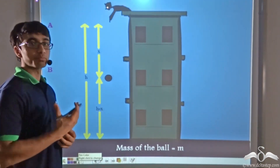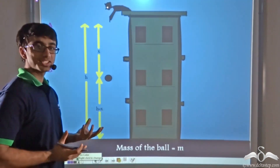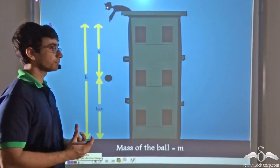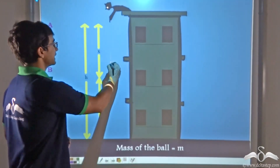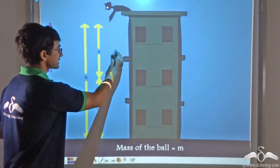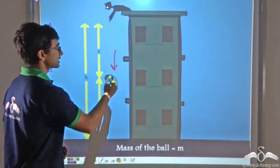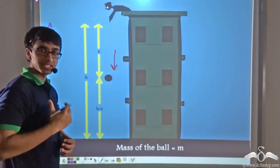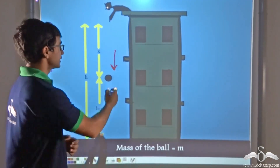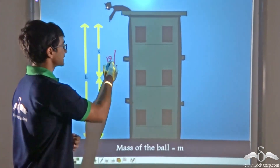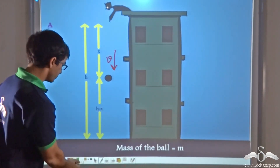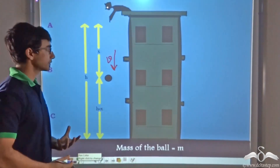Now when the ball is falling from the top of the building to the bottom, it possesses both kinetic energy as well as potential energy. Why? Because when it is falling, it has a certain amount of velocity, so we can say that it has kinetic energy.